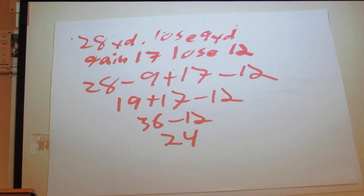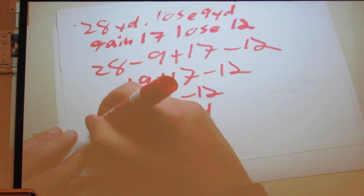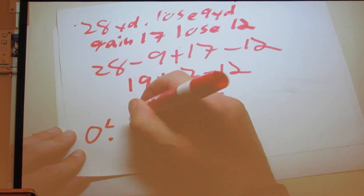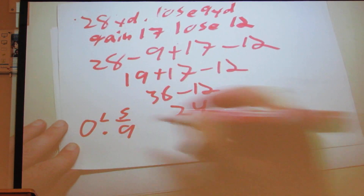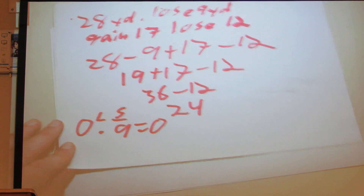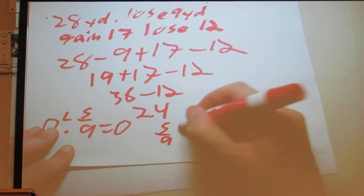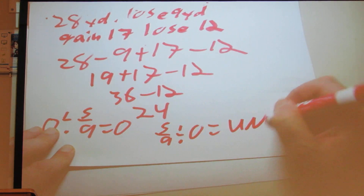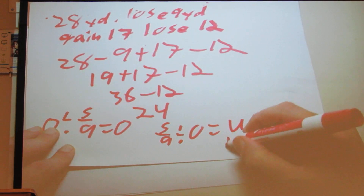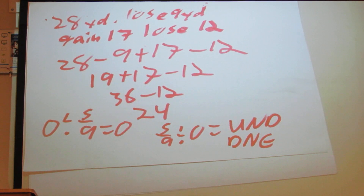Next type of question is division. If you have 0 divided by 5 over 9: 0 divided by anything is 0. If it were backwards — 5 over 9 divided by 0 — it would be undefined. You might have to type in DNE, however it says to do it.